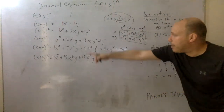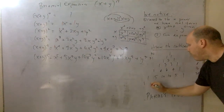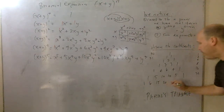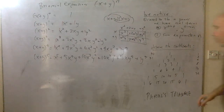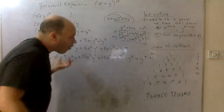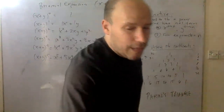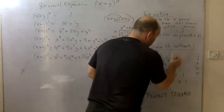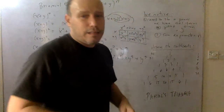So if I ask you to raise something to the sixth power, the coefficients are one, six, fifteen, twenty, fifteen, six, one. These are the coefficients when we expand something to the sixth power. You might also notice this triangle has symmetry — we'll use that in a moment.